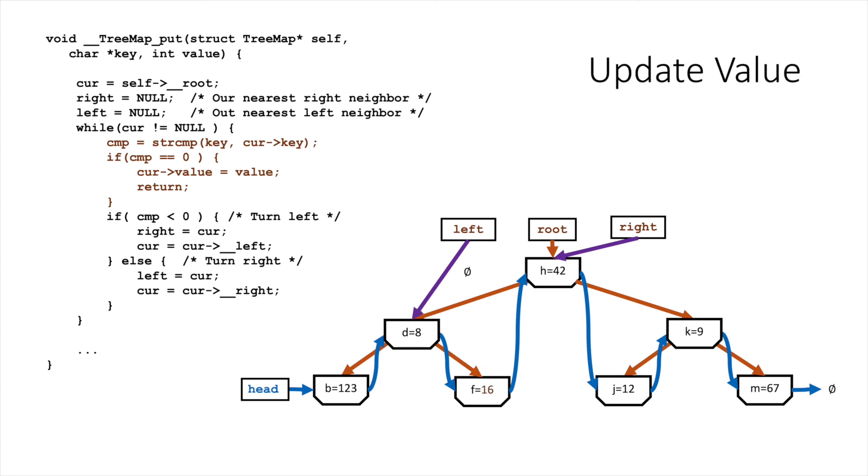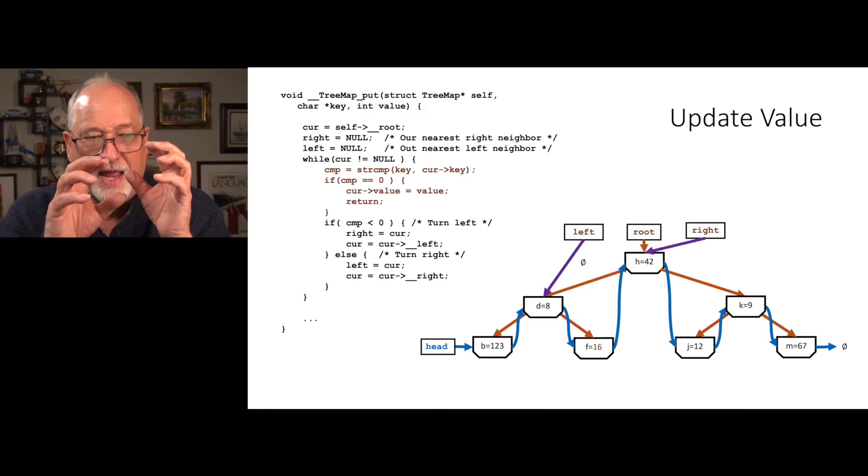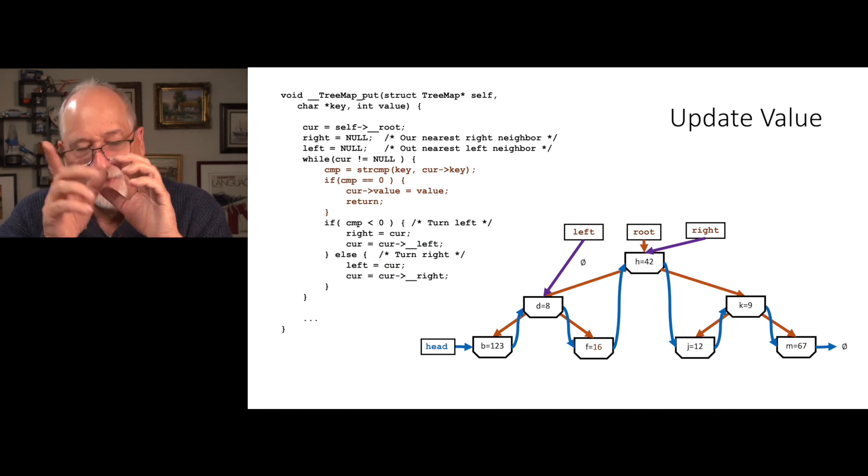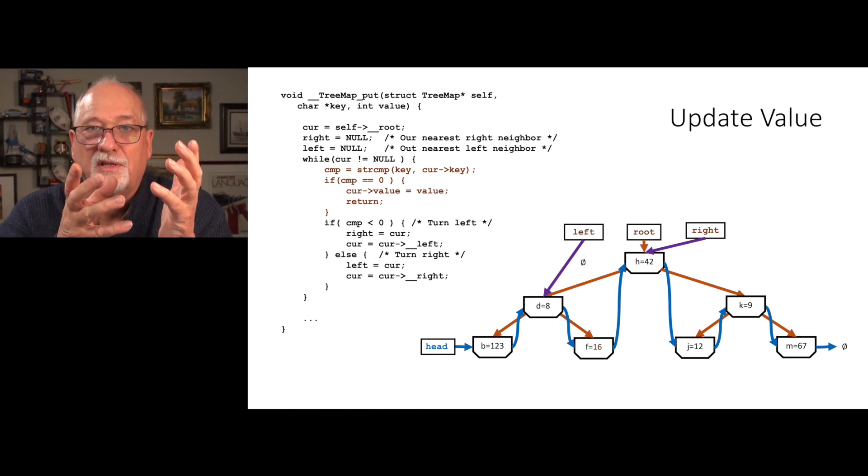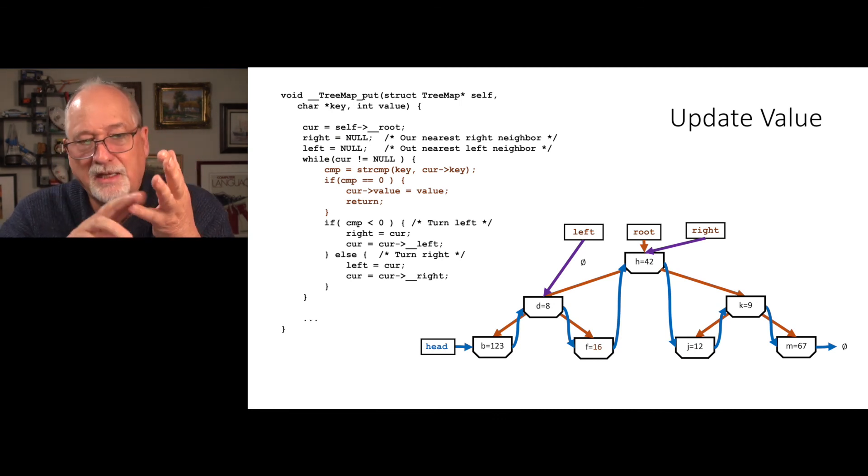f is 16, we're done. Life is simple. If they're equal, we found it. We don't have to keep looking - we found it, we just change it. And again, think of how fast this works when the key's already there. It's like nothing to allocate, no links to make, you just change the value and you're done.